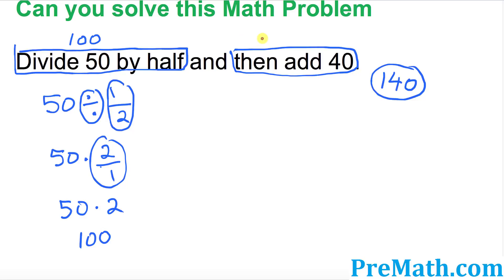Now we're going to move on to the second part. Whatever we got as the answer, we have to add 40 to it. So once we have 100, we're going to add 40, and our complete answer is 140.